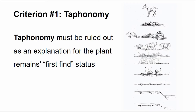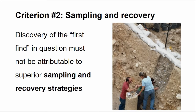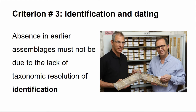Criteria number two: sampling and discovery. Discovery of the first find in question must not be attributable to superior sampling or recovery strategies. Small seeds are often missed in coarse sieves and may not be identified. It's important to have archeobotanical assemblages for comparison that have been systematically sifted for plant remains. If your site is the first in the region where that's done, you'll have many first finds that aren't necessarily new introductions.